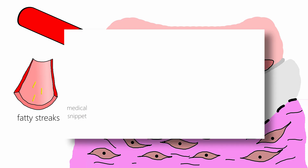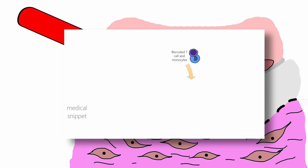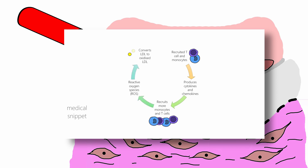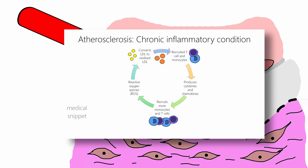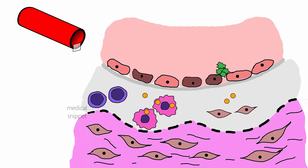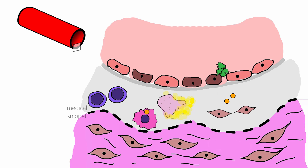The foam cells and recruited T-cells produce cytokines and chemokines that in turn recruit and activate more inflammatory cells and produce more reactive oxygen species. This inflammatory response becomes a vicious cycle responsible for initiation and progression of atherosclerosis. Thus, atherosclerosis is considered a chronic inflammatory condition. With continuous supply of atherogenic oxidized lipoproteins, the macrophages engulf until they die by apoptosis and necrosis, contributing to the formation of a soft lipid-rich core within the plaque.